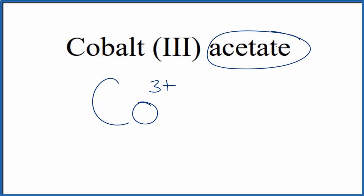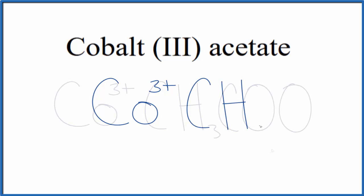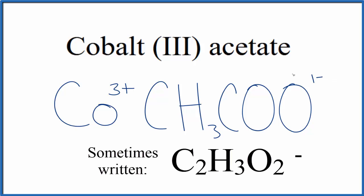Acetate, you're not going to find that on the periodic table. This ATE tells us that this is a polyatomic ion. So you either memorize that the acetate ion is CH3COO, and the whole thing has a charge of 1-, or if you're allowed, you can look it up on a table of polyatomic ions.